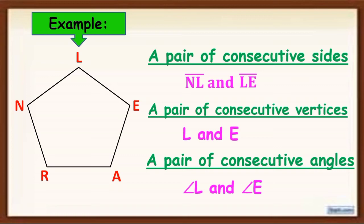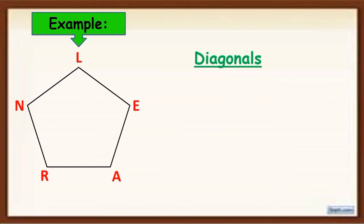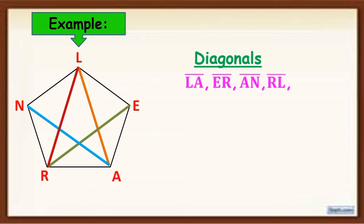Next, diagonal. So pag sinabi natin diagonal, ito ay line segment joining two non-consecutive vertices. So again, non-consecutive vertices. Hindi daw sila magkasunod na vertex. So, alin diyan? The diagonals in this figure are line segment LA, line segment ER, line segment AN, line segment RL, and line segment NE. So, those are the diagonals in this figure.